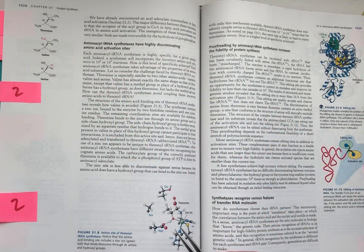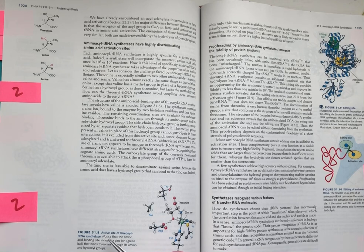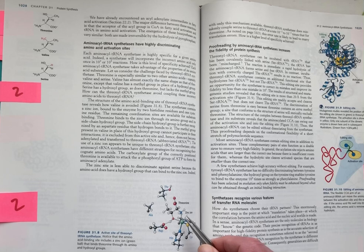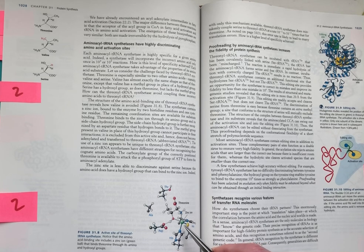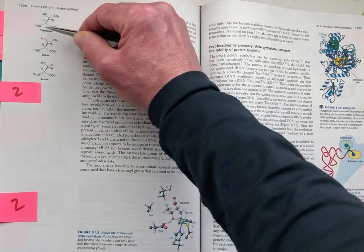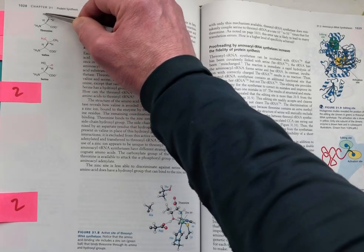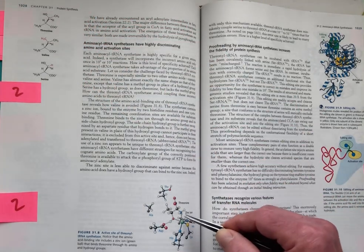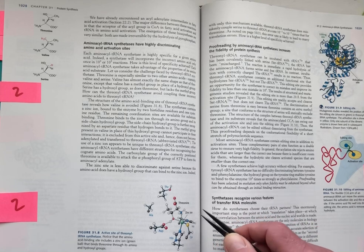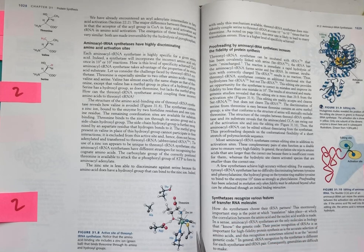This is showing what's labeled as the active site of threonine tRNA synthetase, but I refer to this instead as the specificity pocket for the synthetase. It's showing how a zinc ion is being used to interrogate the identity of this chemical group. Hydroxyl groups will bind favorably with the zinc. And this is one mechanism used by one synthetase for identifying the cognate amino acid, in this case threonine, with its alcohol functional group.